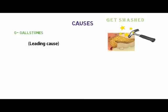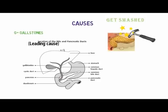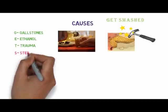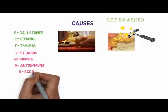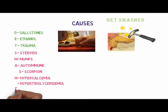Gallstones are the leading cause of acute pancreatitis. Any stone less than five millimeters in the gallbladder can travel down the biliary duct and obstruct the pancreatic duct, causing obstruction to pancreatic secretion, which leads to inflammation of the pancreas. E is for ethanol, meaning alcohol — the second leading cause. T is for trauma, especially blunt abdominal trauma. S in 'smash' stands for steroids, M for mumps, A for autoimmune diseases, S for scorpion stings, and H for hypercalcemia and hypertriglyceridemia. E for ERCP — endoscopic retrograde cholangiopancreatography.